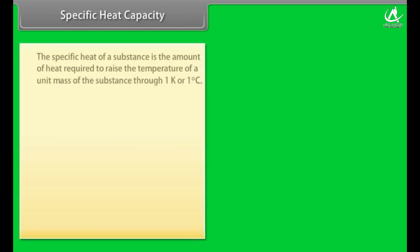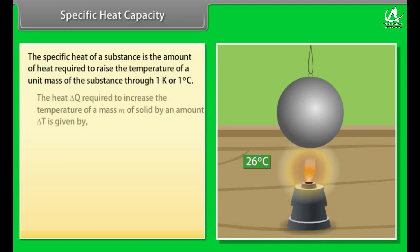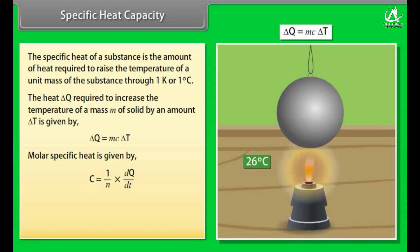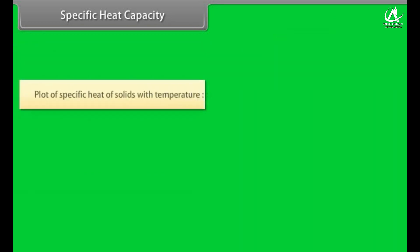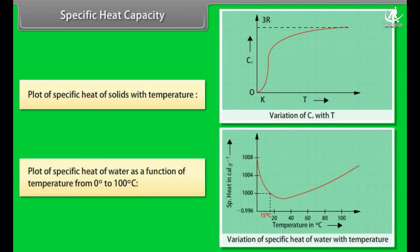Specific heat capacity: the specific heat of a substance is the amount of heat required to raise the temperature of a unit mass through 1 Kelvin or 1 degree Celsius. The heat ΔQ required to increase temperature of mass M by ΔT is given by ΔQ = McΔT. Molar specific heat is given by C = (1/N)(dQ/dT). Nearly 25 J mol⁻¹ °C⁻¹ is required per mole to raise the temperature of each metal by a given amount. Graphs show variation of specific heat of solids and water with temperature.